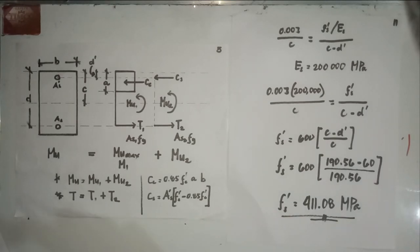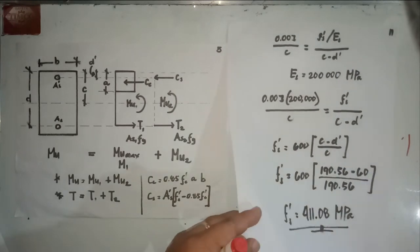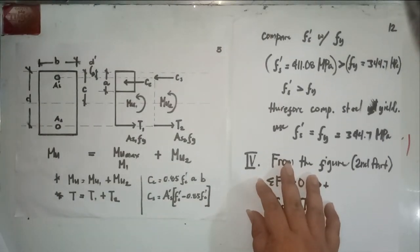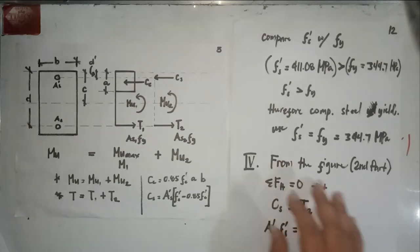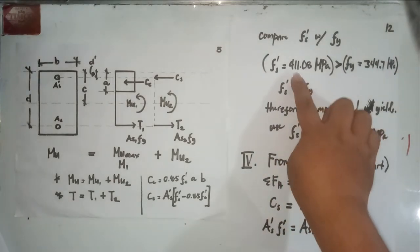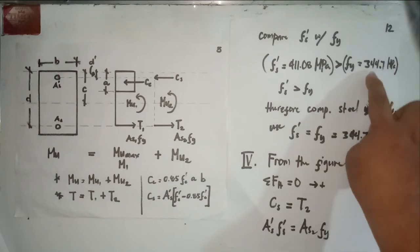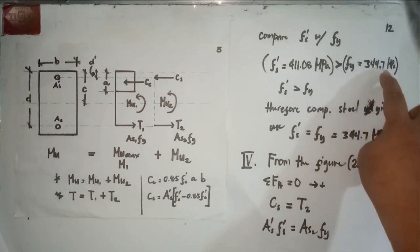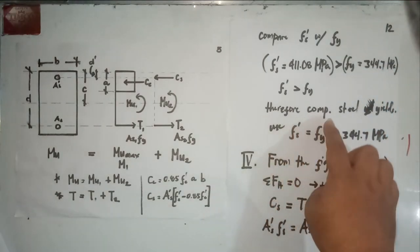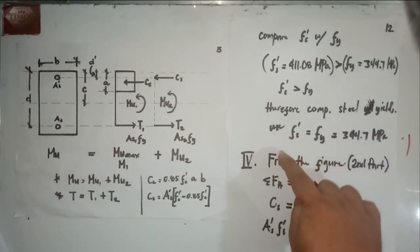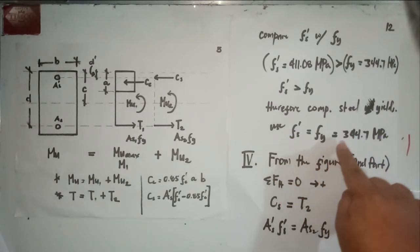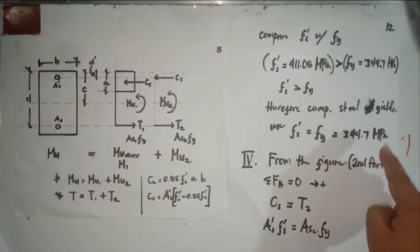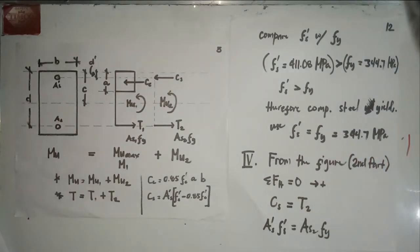Comparing F'S with FY: F'S = 411.08 MPa is greater than FY = 344.7 MPa. Therefore, the compression steel yields. Use F'S = FY = 344.7 MPa.